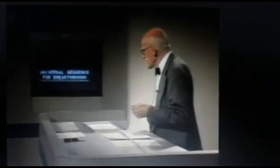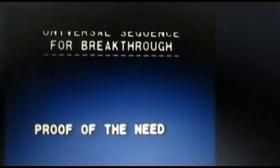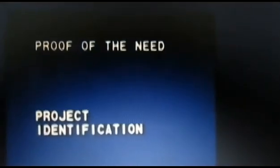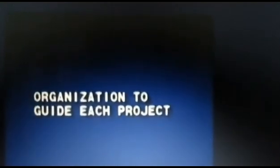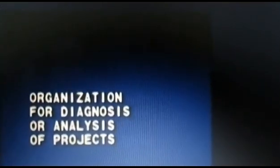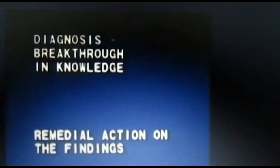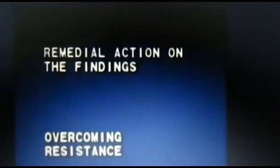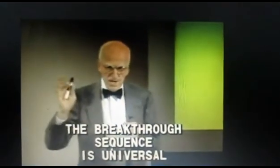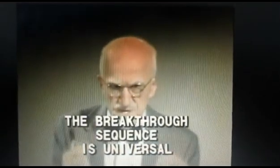When we review many cases of breakthrough, we find that there is a universal sequence of events through which all managers made their improvements. First, there is proof of the need — why change what we are doing? Then project identification — specifically what are we going to tackle? Then comes organization to guide and diagnose each project. Then follows diagnosis, a breakthrough in knowledge. Next comes remedial action on the new knowledge, including overcoming resistance to change. And finally, there is control at the new level — holding the gains. This sequence is universal; all breakthroughs follow it. The first step is proof of the need.